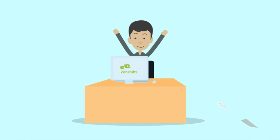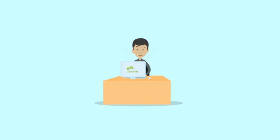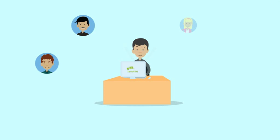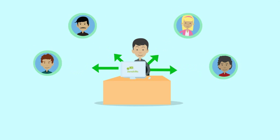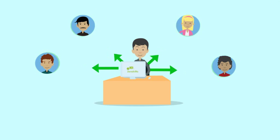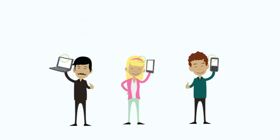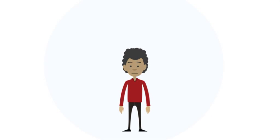Now let's add ZenShifts into the process. Josh creates next week's roster in accordance with everyone's availability and sends it out directly to everyone. Any shift changes from Josh or his staff automatically update the roster for everyone, so there is no more confusion. ZenShifts is available to all staff online from any mobile, tablet, or computer — just in case James loses his phone on Saturday night.